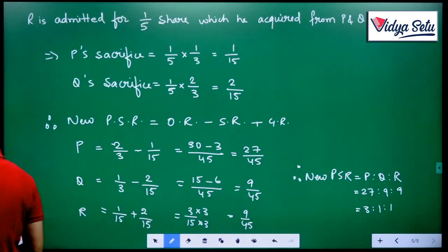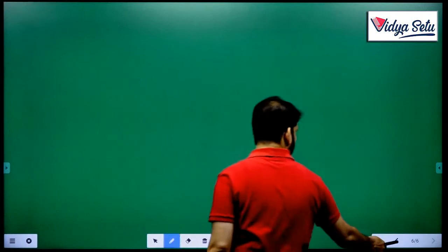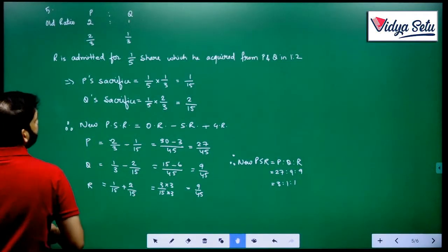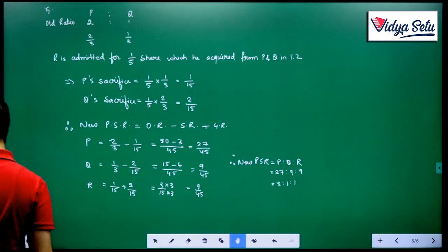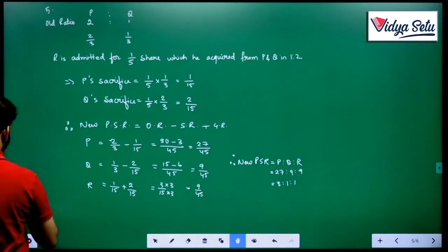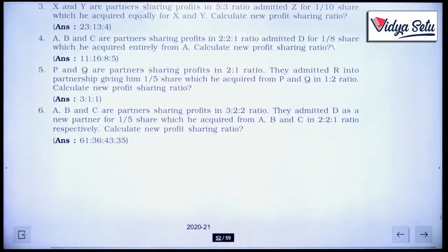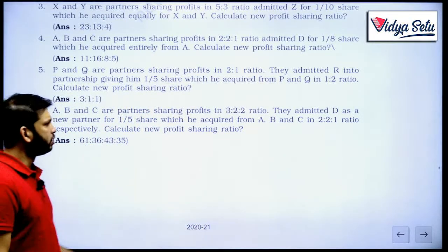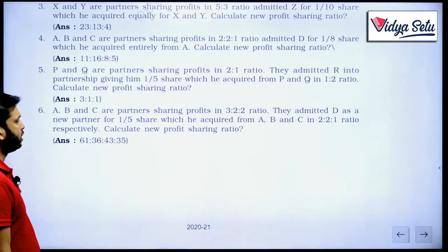Let us check whether the answer is 3 to 1 to 1 — yes, new PSR equals 27 to 9 to 9, that is 3 to 1 to 1. Let us do question number 6. A, B and C are partners sharing profits in the ratio 3 to 2 to 2. They admitted D as a new partner for one-fifth share which he acquired from A, B and C in the ratio 2 to 2 to 1. Calculate the new profit sharing ratio.